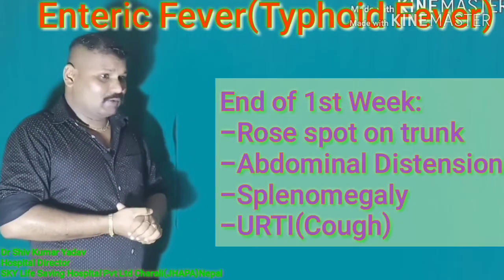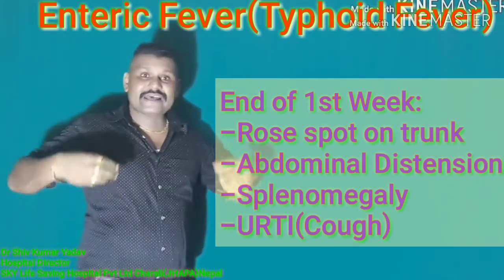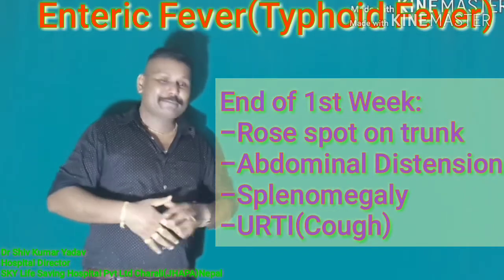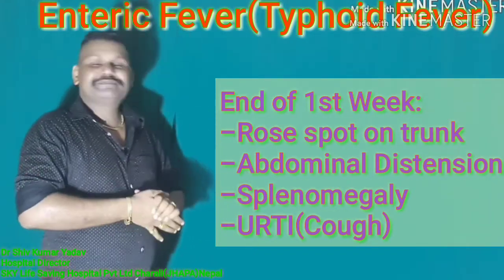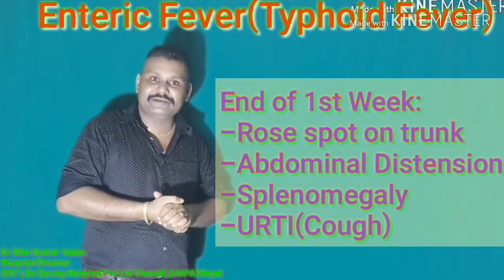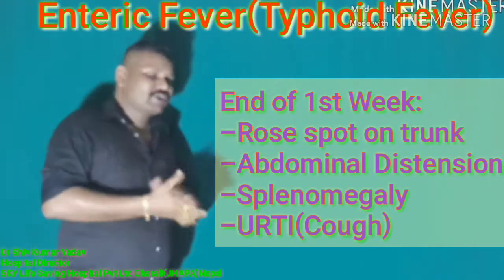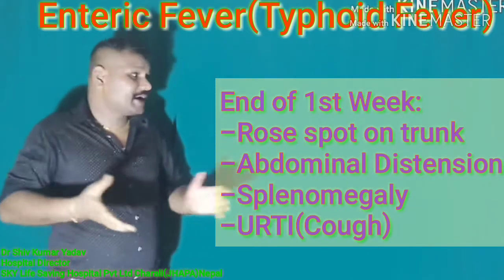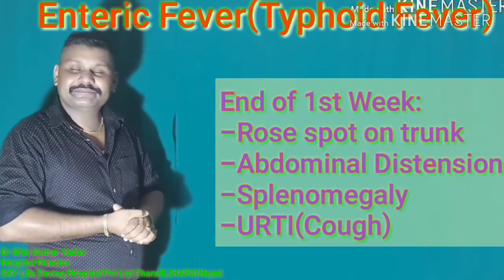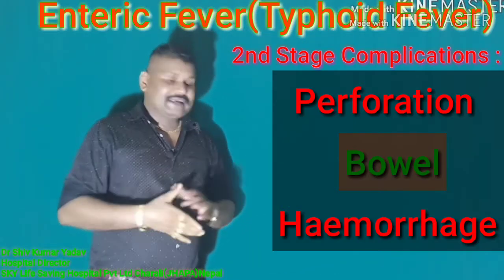At the end of the first week, the patient develops rose spots on the trunk, abdominal distension, upper respiratory tract infection especially cough, diarrhea, and splenomegaly.